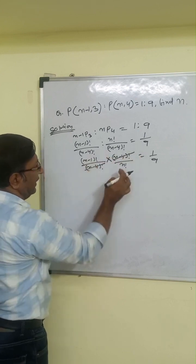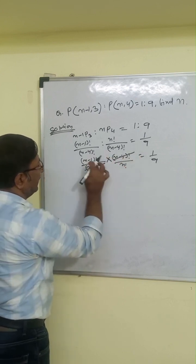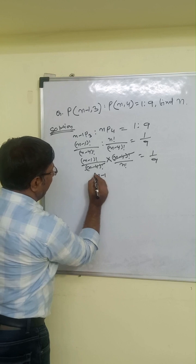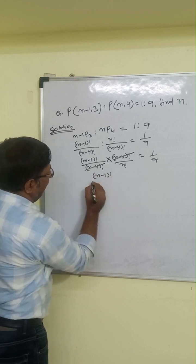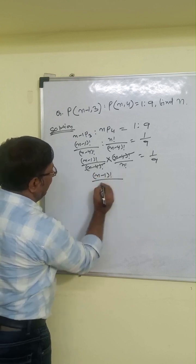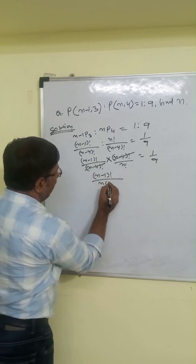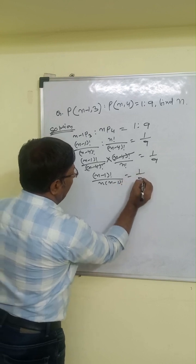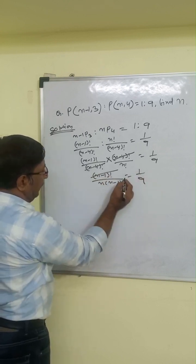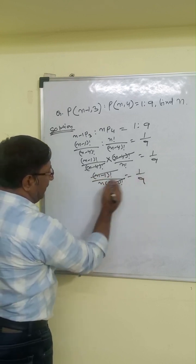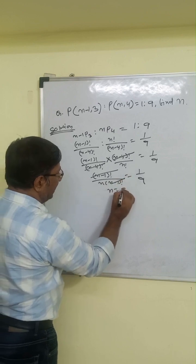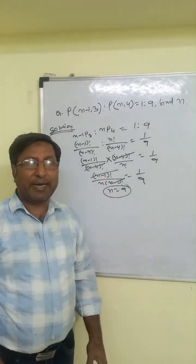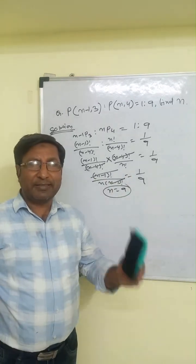The n minus 4 factorials cancel out. Since n minus 1 is less than n, we can write n factorial as n into n minus 1 factorial, equaling 1/9. The n minus 1 factorials cancel, and after cross multiplication, n equals 9. So our correct answer is 9.